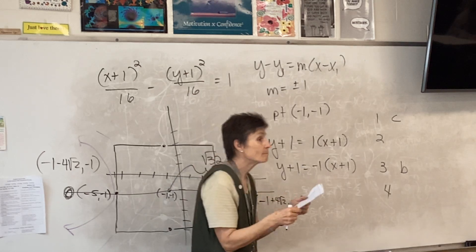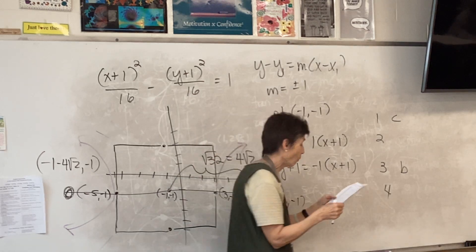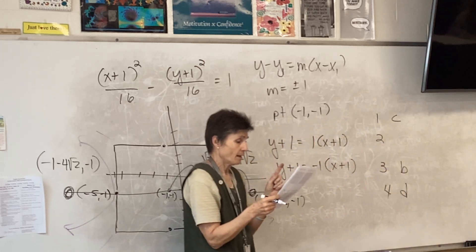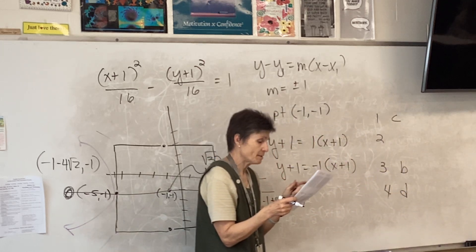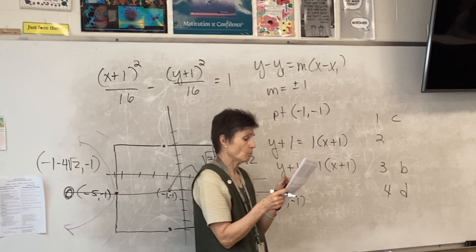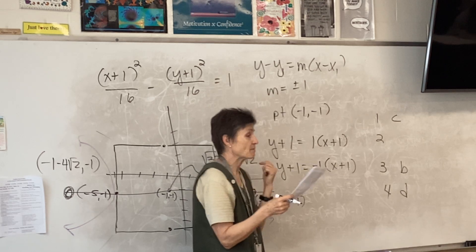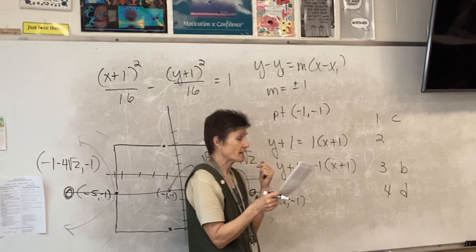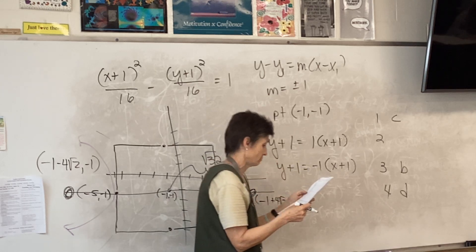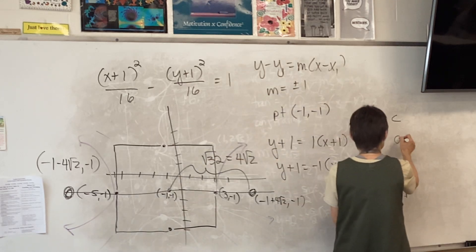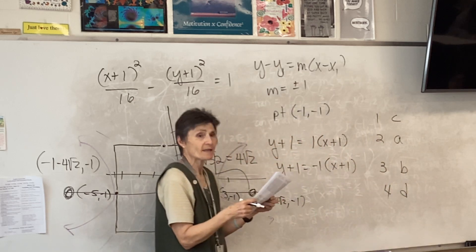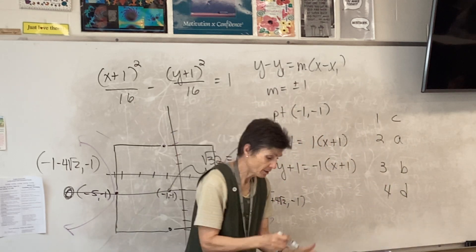Number 4 is D. Look at 4 — the center must be at 2, negative 1, and it opens sideways. I think you're right. Which means that 2 is A. Do you agree with that?